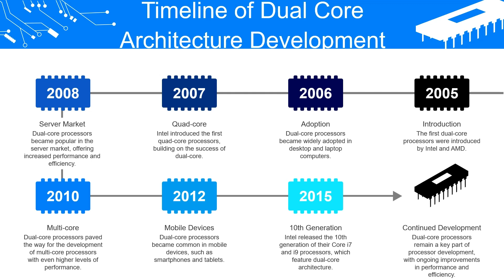In 2012, dual core processors became common in mobile devices such as smartphones and tablets. Intel also released the 10th generation of their Core i7 and i9 processors featuring dual core architecture. Dual core processors remain a key part of processor development with ongoing improvements in performance and efficiency.